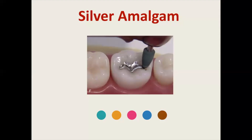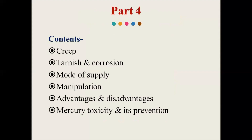In the first three parts we learned about the introduction of Silver Amalgam, its composition, classification, the role of each constituent, and its indications. In the second part we learned the amalgamation reaction with the microstructure of Silver Amalgam of both low copper and high copper. In the third part we learned two properties: strength and dimensional changes. Now in the fourth part we will learn about creep, tarnish and corrosion, mode of supply, manipulation, advantages and disadvantages, and mercury toxicity and its prevention.